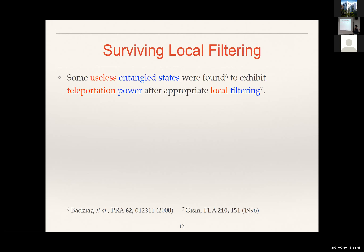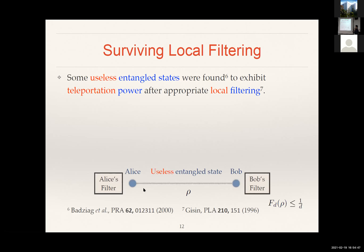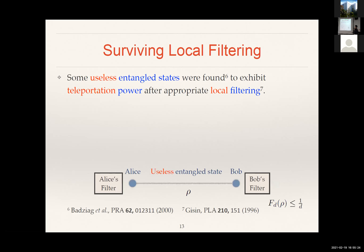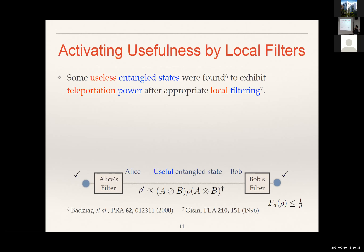Let me try to explain schematically what I mean. Imagine that Alice and Bob share some entangled states that are useless. You could imagine that you now allow Alice to perform some local operations on her half of the subsystem and the same thing for Bob. This could be, for instance, if you're thinking about photons, polarizers such that in one run of the experiment maybe the photon goes through and survives, but in another part fails. But for exactly the same filters, in another run of the experiment they both survive.